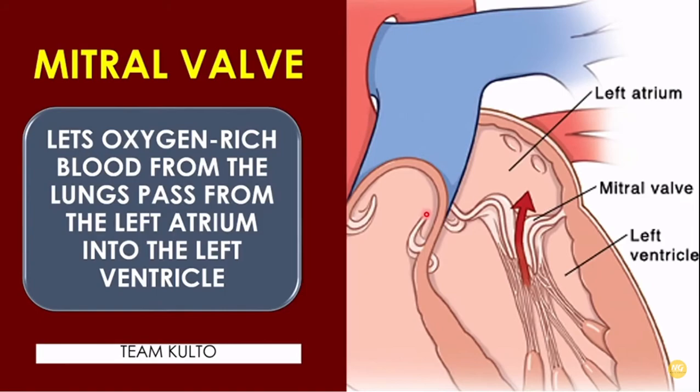Next, we have the mitral valve. The mitral valve lets oxygen-rich blood from the lungs pass from the left atrium into the left ventricle. So now, the blood is already oxygenated.